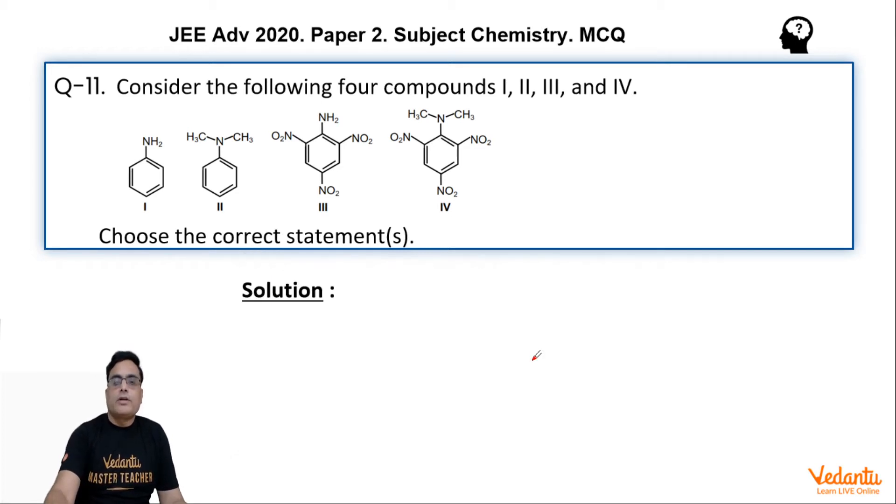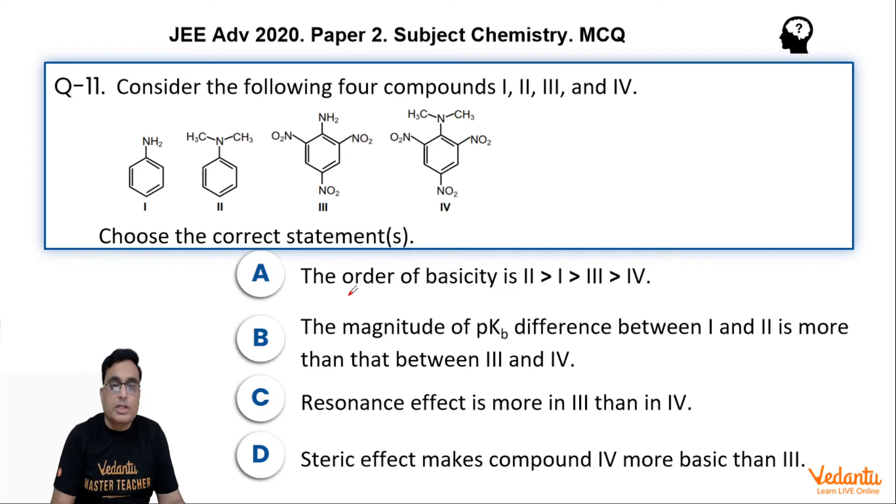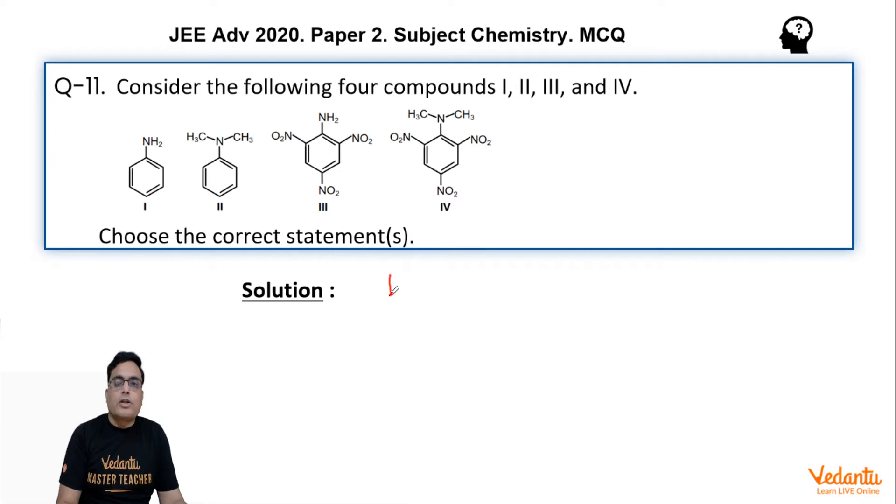As for the order of basic strength is concerned, in option A this order is wrong. Why? Among aromatic anilines, the order of kb value or basicity order is 3-2-1. That means, suppose you are having primary aromatic amine, secondary aromatic amine, and tertiary aromatic amine. Then in case of aromatic amines, the basicity order is like this: 3-2-1.